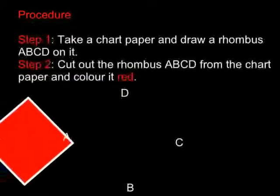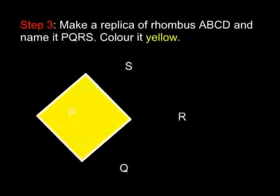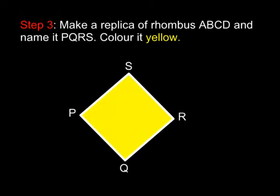Take a chart paper and draw rhombus ABCD on it. Cut out the rhombus ABCD from the chart paper and color it red. Make a replica of the rhombus ABCD and name it PQRS. Color it yellow.